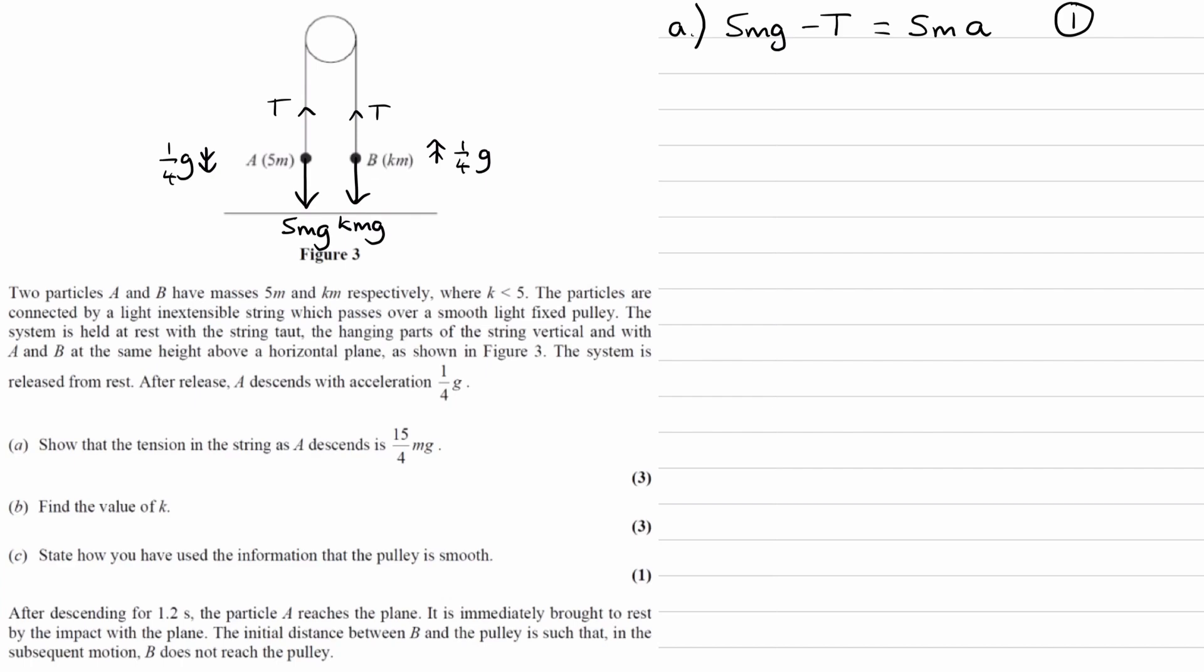And then for B, the resultant force is upwards. So that will be T minus kmg. That will be the overall upwards force. And that will be equal to ma for B. B's mass is km. And there is our second equation.